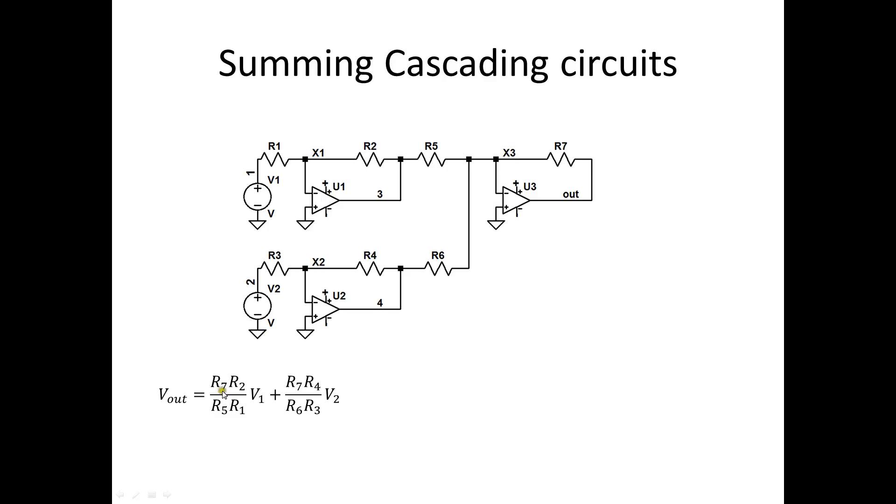And so, we have R2 times R7 divided by R5 and R1. And we have R7 times R4 divided by R6 times R3.